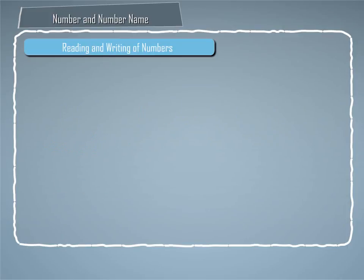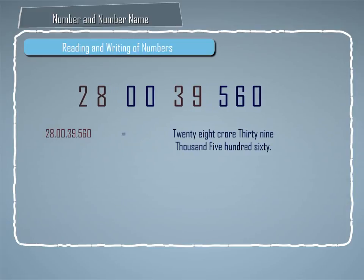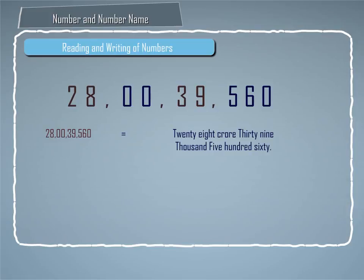Let us understand this with the help of an example. Write the number names of this number. Dividing into periods, we get 28,39,560.